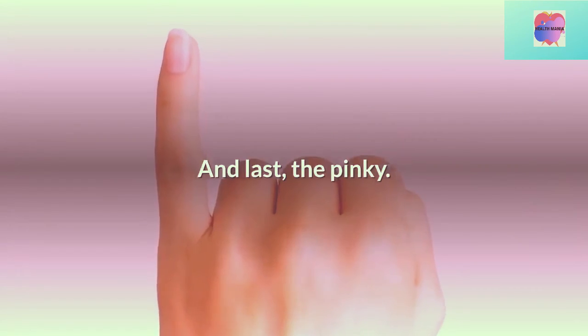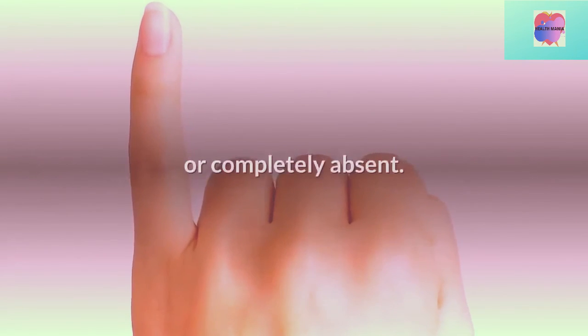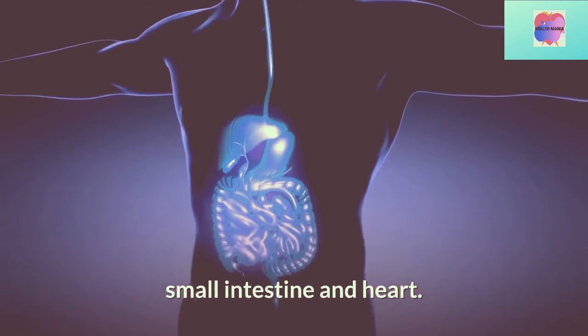And last, the pinky. On this finger, the lunulae is usually almost invisible or completely absent. It is linked to the functioning of kidneys, small intestine, and heart.